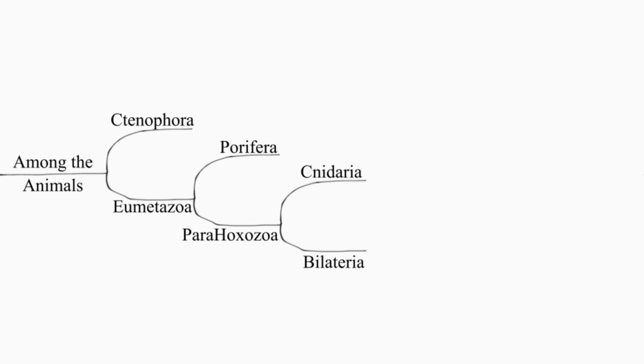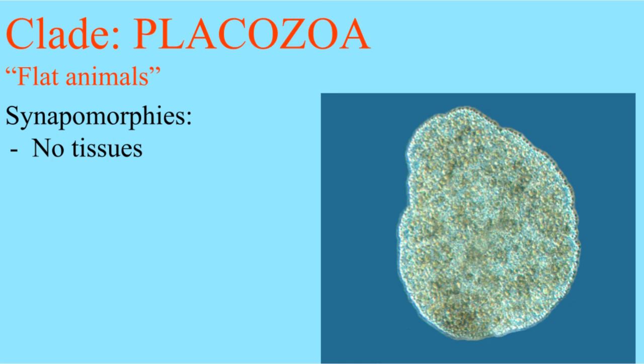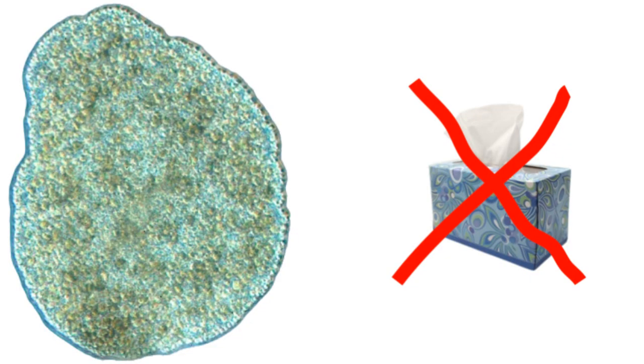Next up, parahoxozoa divides up into bilateria and cnidaria, two sides and stinging nettle. Now is probably a good time to talk about placozoa. Placozoans are painfully simple. Like the sponges, they have no tissue and reproduce asexually, but they're really just blobs of cells.